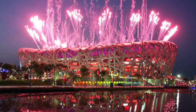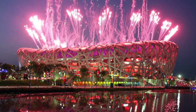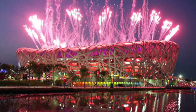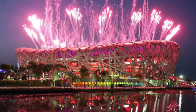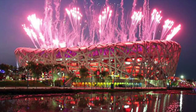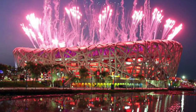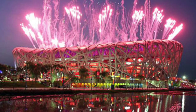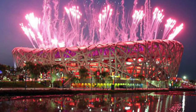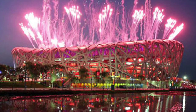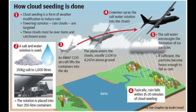Approaching storms were seeded so that they would release their precipitation before they reached the complex. Even in dry areas, the air contains some water. Rainfall occurs when droplets of water form around other particles in the air, like dust, and become too heavy to remain suspended. The droplets then fall and form rain.